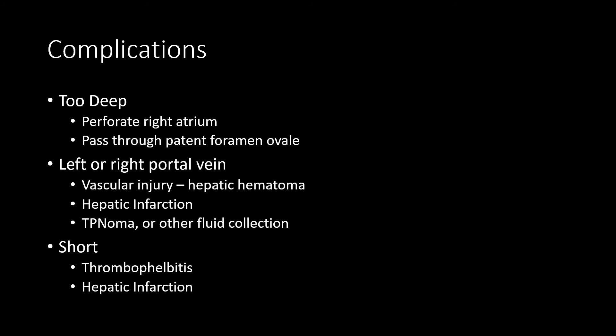What are the complications we see? Catheters that are too deep have been known to perforate the right atrium, and have also been known to pass through the foramen ovale and terminate in the left atrium, resulting in potential administration of medications to the left heart, which can be dangerous. If they terminate in the left or right portal vein, you can get direct vascular injury leading to hepatic hematoma, or infarction due to thrombosis or irritation from medication administration. The classic complication is a TPNoma — a collection of TPN that has filled a hepatic infarction. Catheters that are too short can cause thrombophlebitis and thrombosis of the umbilical vein, and administered fluids can also diffuse into the portal venous flow and cause hepatic complications.